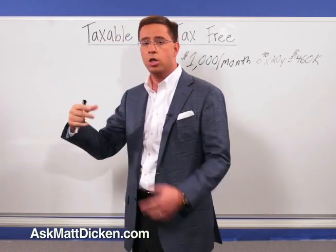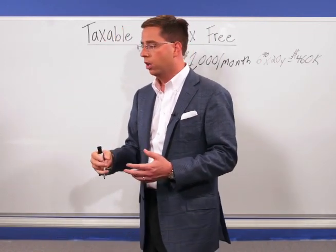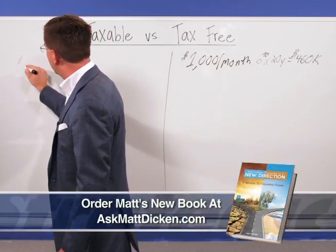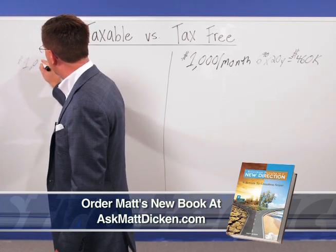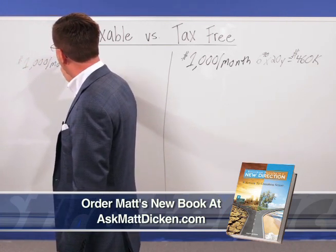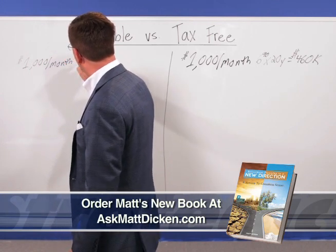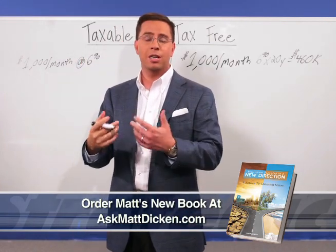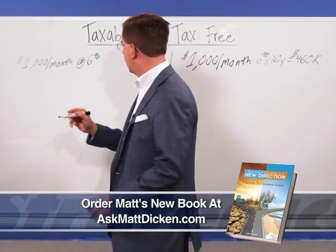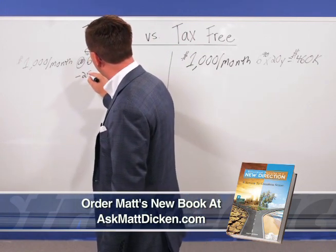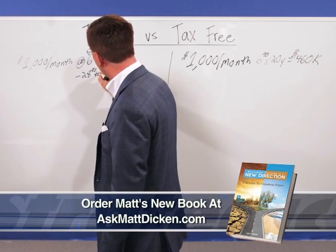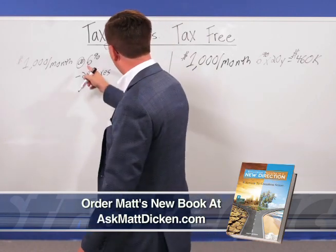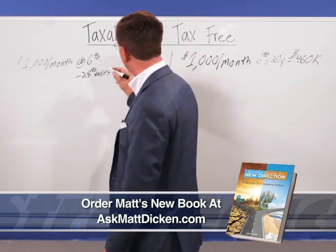Now let's say someone didn't know any better and put their money into a taxable environment — a taxable mutual fund, money market, or CD, something like that. We'll use the same example: $1,000 per month invested into a taxable environment, still growing at 6% interest. But this time we're not getting 6% net because we have to pay taxes on the growth out of the account each year. Let's say we're in a 28% tax bracket, which is the national average when you add up federal, state, and local income taxes. So we're growing at 6%, but paying 28% in tax along the way.